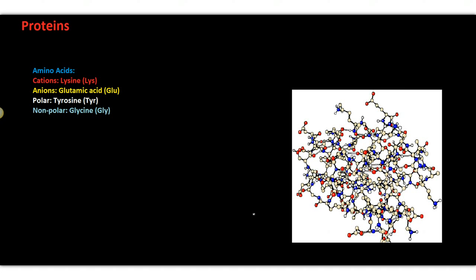The amino acids are, there are four different types of amino acids. Just like I was talking about in a recent video about the four different types of molecules within our body. There are cations, anions, polar, and non-polar molecules.